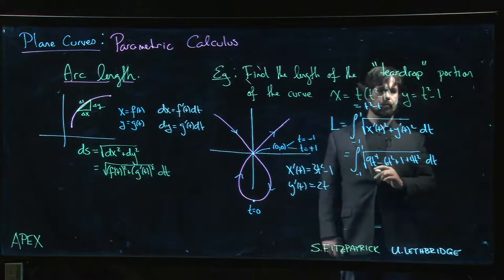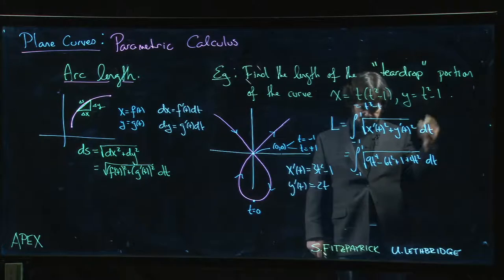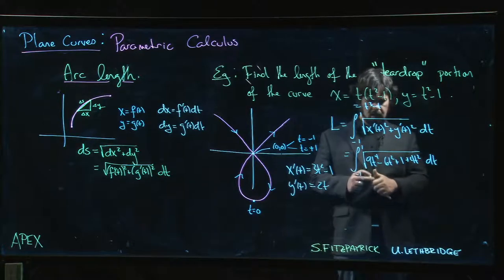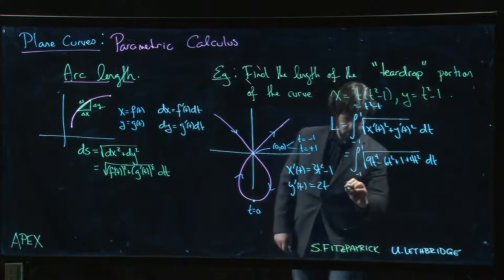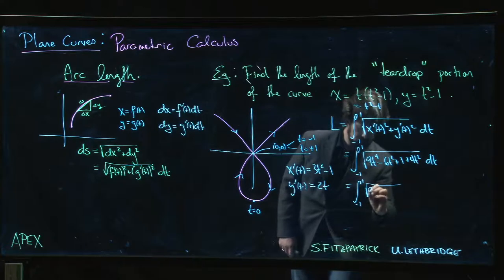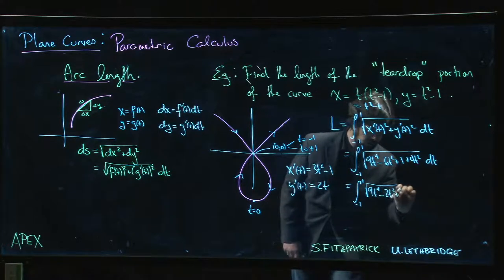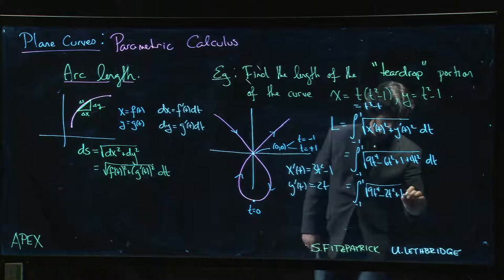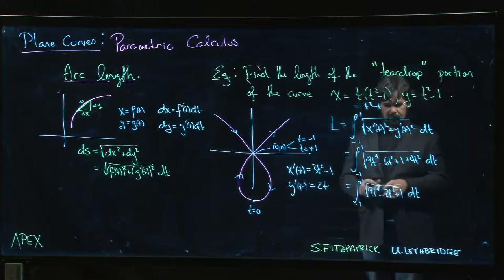Okay dt. It's not looking so good. I mean we can see it's even, that's going to help us out probably. We can simplify at least so we get 9t⁴ minus, so now it's going to be -6 + 4, -2t² + 1 dt. And okay so this is one of these times where we hope maybe things have been set up for us so we can factor.